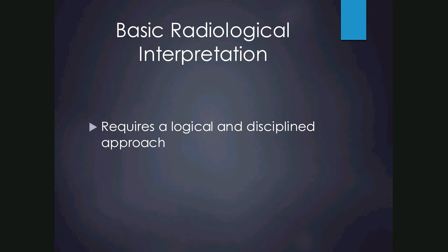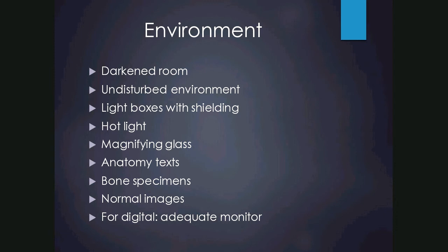The radiologist's environment needs to be optimised for reading, and ideally this consists of a darkened room that's undisturbed. For older film-type radiographs it would be a light box with shielding, hot light or magnifying glass, and anatomy texts, bone specimens and normal images can also help. For digital radiography an adequate monitor is needed to assess images.